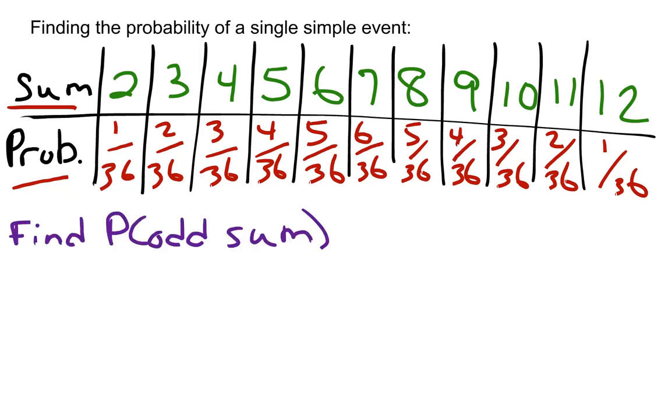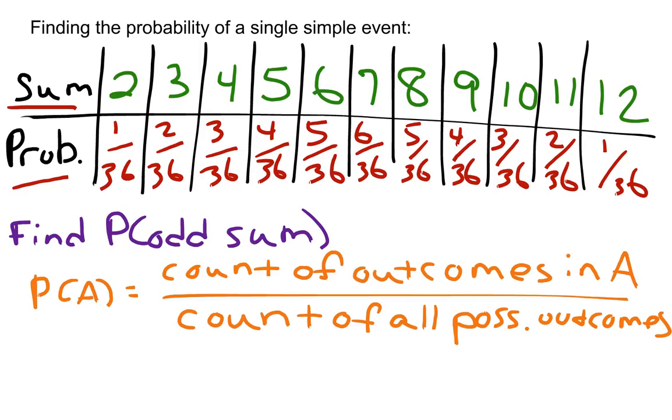Suppose I ask you to find the probability of getting an odd sum when you roll two dice. The general formula for finding probability of a single simple event is the probability of A equals the count of outcomes in A divided by the count of all possible outcomes.